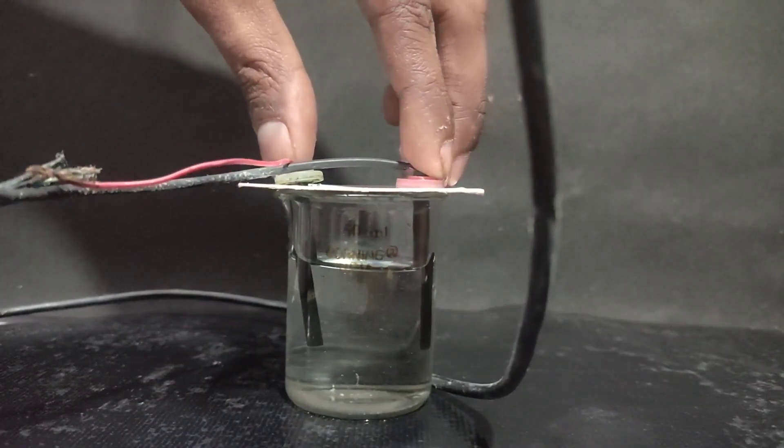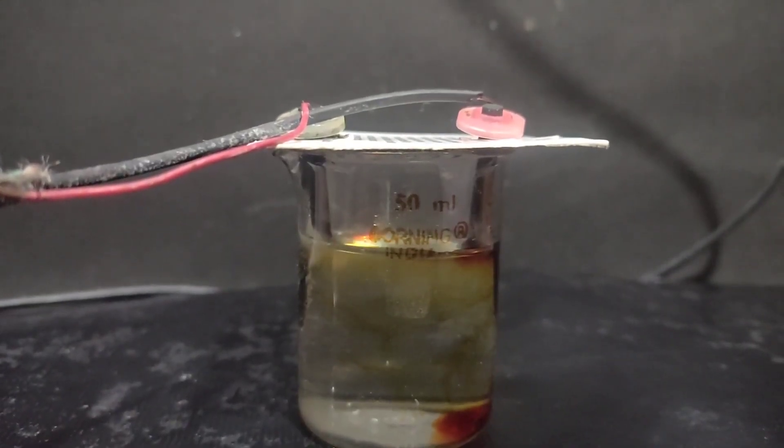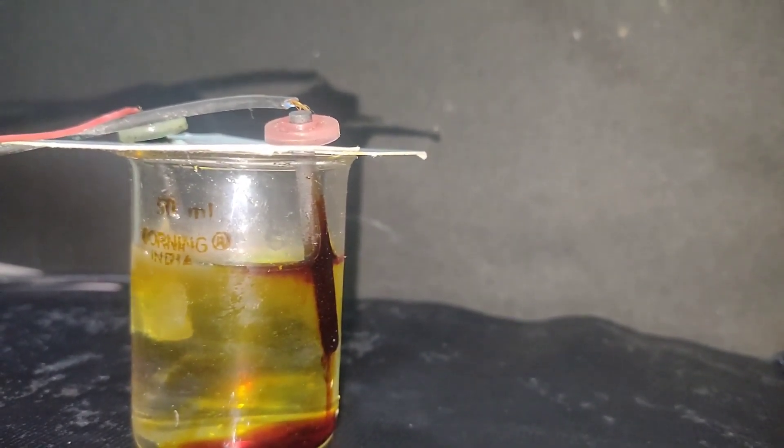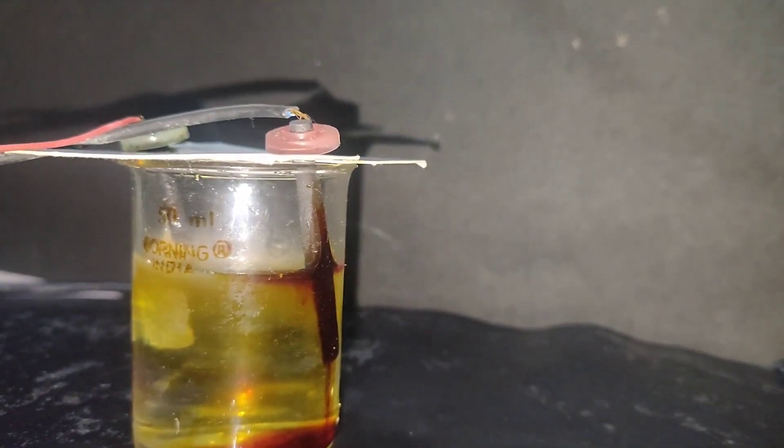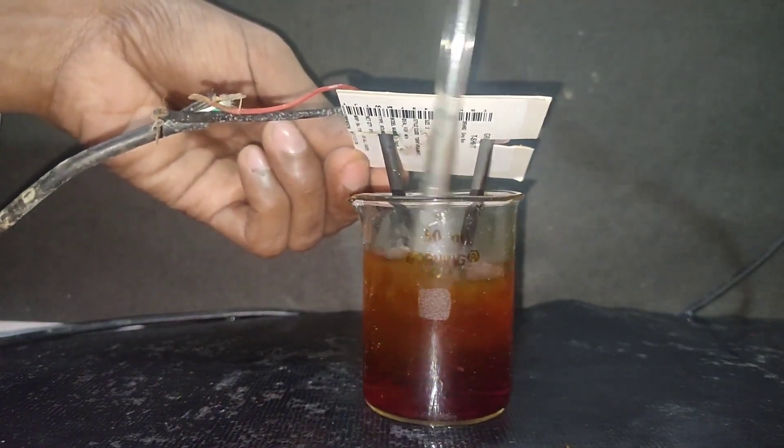Then I placed two graphite electrodes over it and switched on the current. On the cathode, which is the left, hydrogen gas is evolved and on the right, a brown stream is formed. I stirred the solution with a glass rod occasionally after short time intervals.